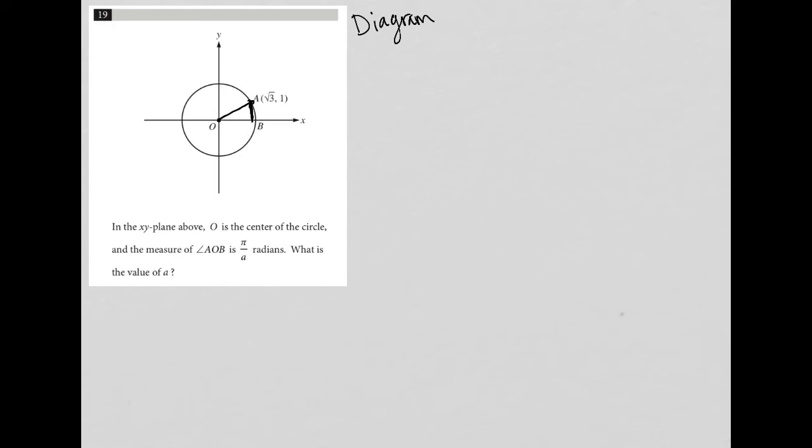from the origin to that line is square root three, because that's what point A is telling me, and to the y-axis right there, that is one. So there we go. Got some dimensions of that. Looks like a right triangle.